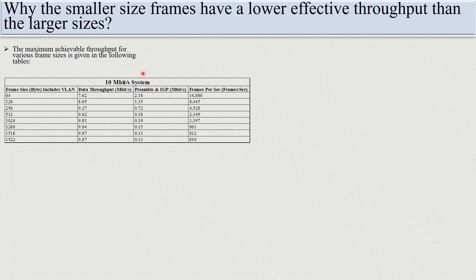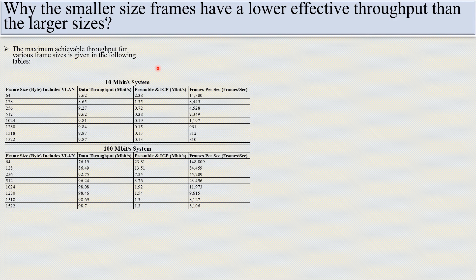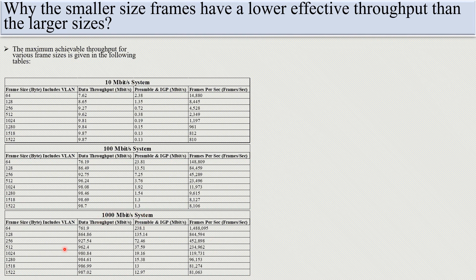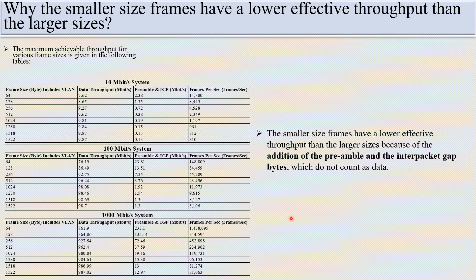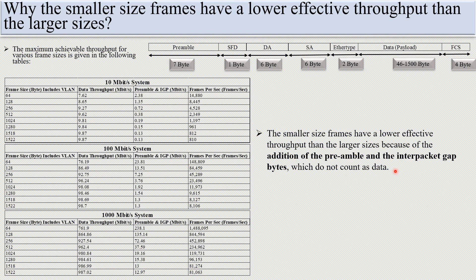For a 100 Mbps system: at 64-byte frame size, data throughput is 76.19 Mbps, preamble is 23.81 Mbps, and frame rate is 148,809 frames per second. As the frame size increases, the data throughput increases, preamble decreases, and frames per second decreases to maintain the 100 Mbps bit rate. The same pattern holds for a 1000 Mbps system.